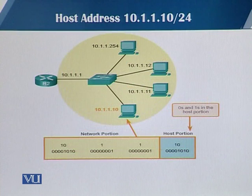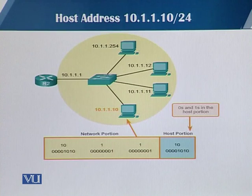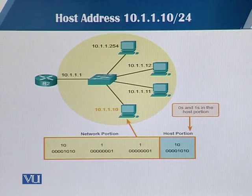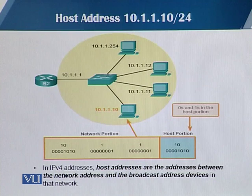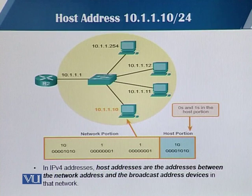The third type is the host address, which is the end host address or the router interface address. Machines — whether routers, switches, or end devices — are assigned an IP address called the host address. In the host portion, you can have any combination of zeros and ones. The range of host addresses lies between the network address and the broadcast address.